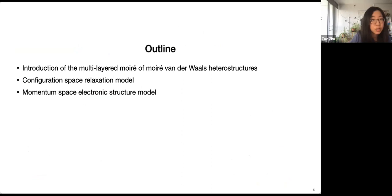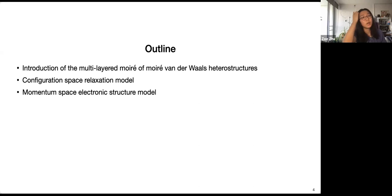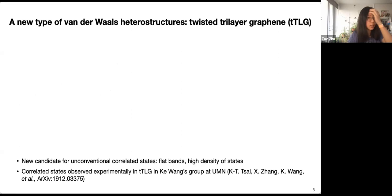Here is a quick outline of my presentation. First I'll introduce the system of interest and talk about the geometry and how to understand the landscape. Then I'll go into modeling the relaxation and the electronic structure respectively. Even though our model is completely general and can be applied to any type of system, I'll use twisted trilayer graphene as an example.